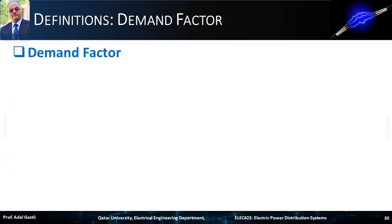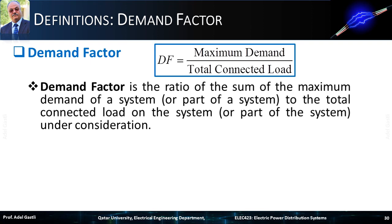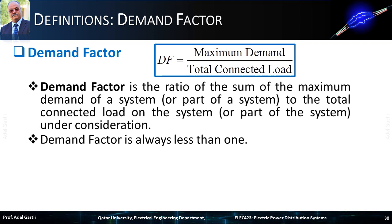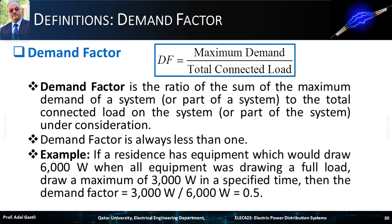Now we will define the demand factor. The demand factor is the ratio of the sum of the maximum demand of a system, or part of a system, to the total connected load on the system under consideration. So the demand factor is always less than 1. For example, if a residence has equipment which would draw 6,000 watts when all equipment was at full load, and draws a maximum of 3,000 watts in a specified time, then the demand factor equals 3,000 over 6,000, which equals 0.5.